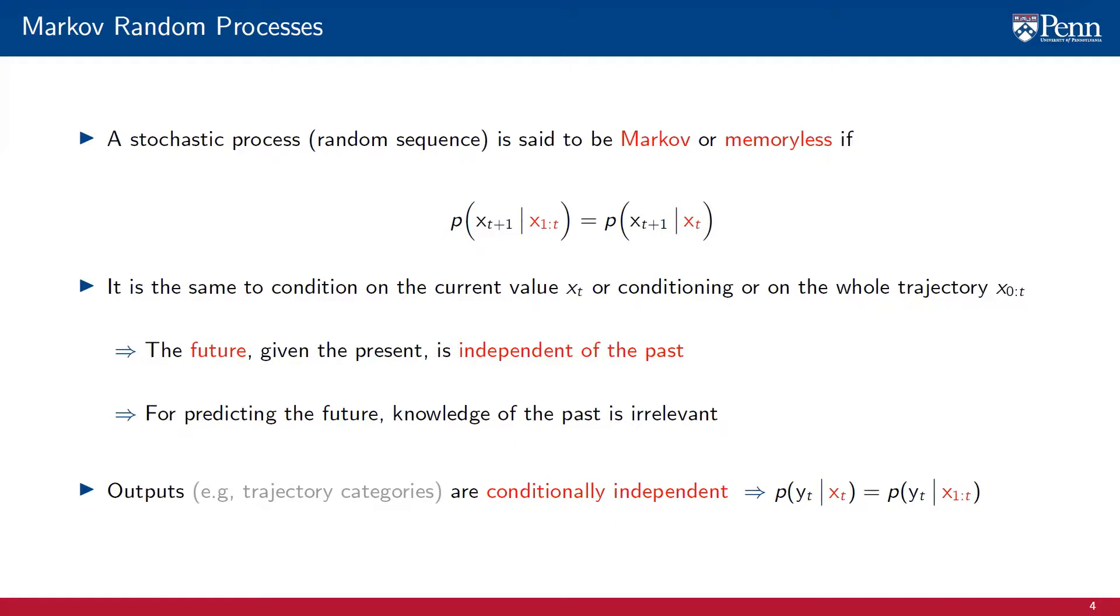In addition to the state x of t, a Markov process may also have some outputs y of t. When this is the case, the outputs are assumed to be conditionally independent. The probability of the output taking some value yt, given only the current value of the stochastic process xt, is the same as the probability of yt conditioned on the entire trajectory of the stochastic process. An example of an output is the trajectory category, whether we are entering the forbidden area or not.